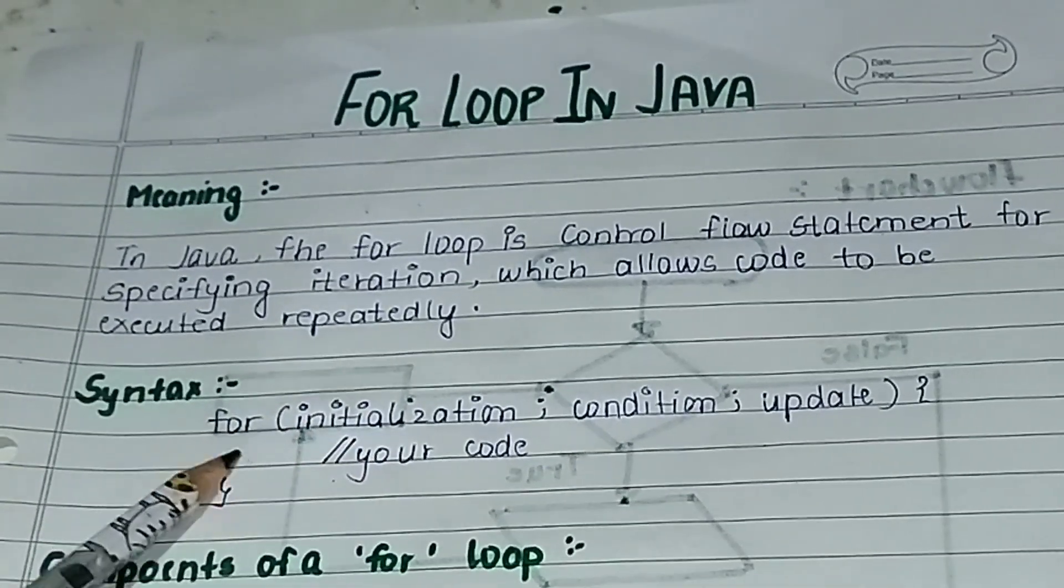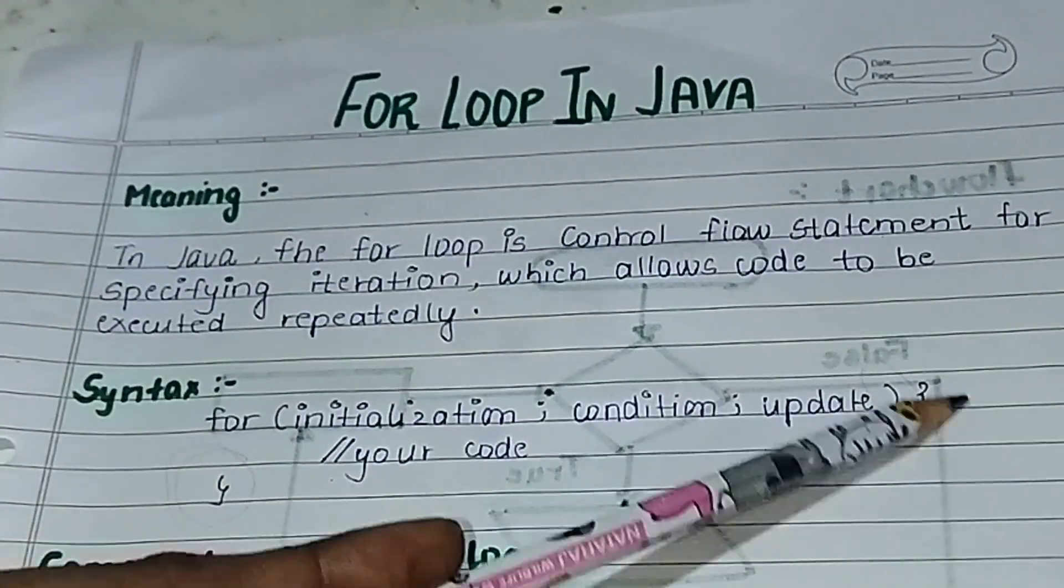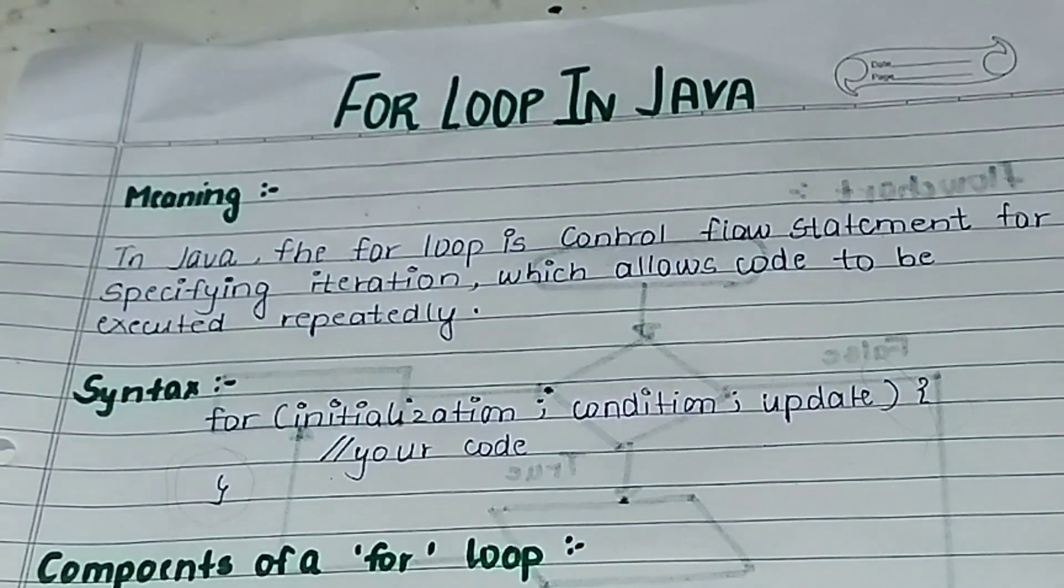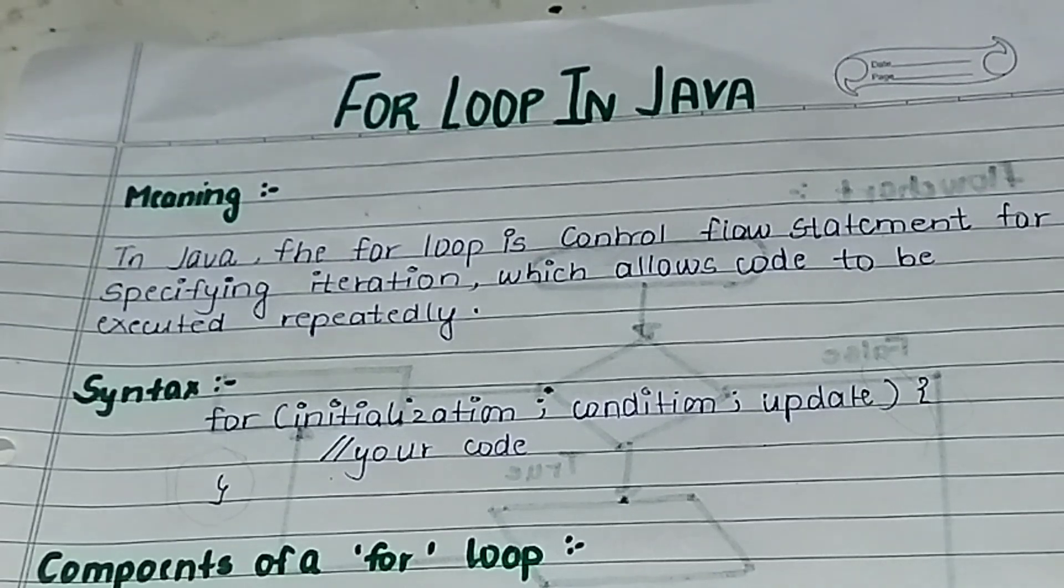And here comes our code, whatever comes inside this block. So what is initialization? Initialization is when we initialize a value, when we fix a value. And condition means what condition we need to follow, or on what basis our code will run. And last is update - update can be increment or decrement. We can increase the value or decrease it.